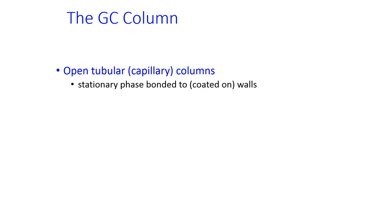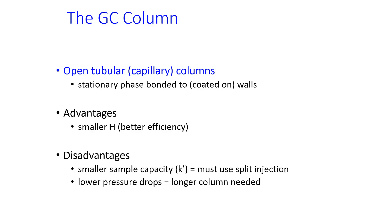As compared to a capillary column. In a capillary column, the stationary phase is coated onto the walls of the column instead of packed in. The advantages of this is that they're more efficient than a packed column, but they have a smaller sample capacity. So, open tubular columns almost always use split injection instead of direct injection. You also need a longer column because you can't have as big of a pressure difference between the beginning and the end of the column with this kind.